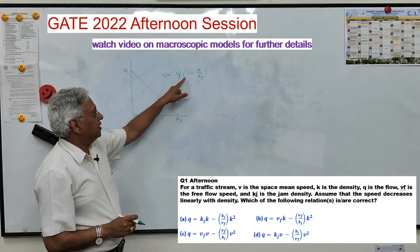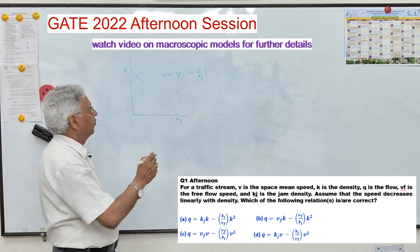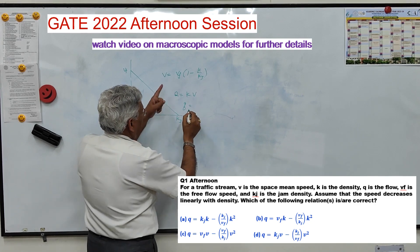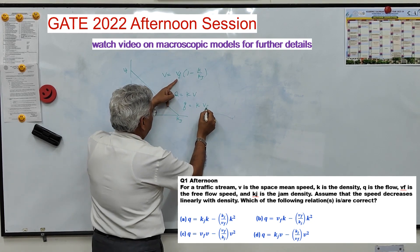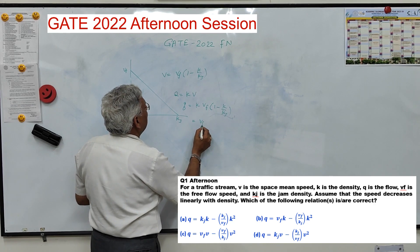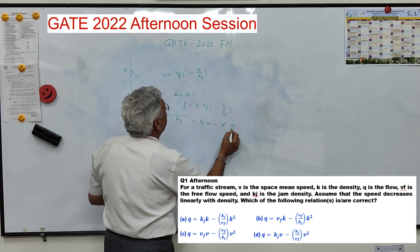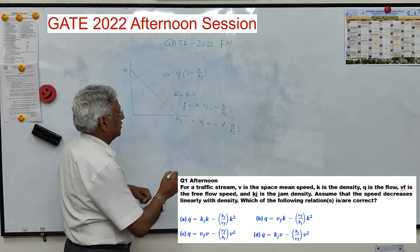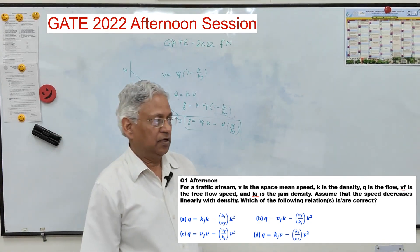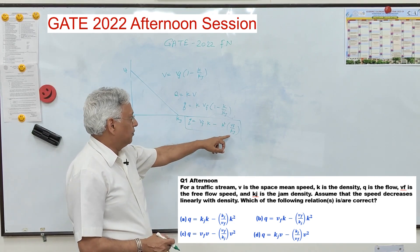You can find the speed at any density k if you know the boundary conditions vf and kj. The fundamental equation is q = k × v, so q = k × vf × (1 - k/kj), which simplifies to q = vf·k - (vf/kj)·k². That is option B, the correct answer.